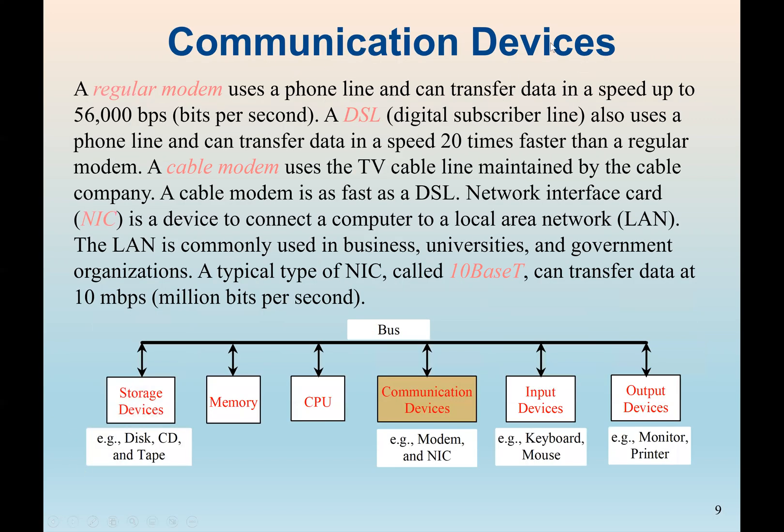We also have the communication devices. Nowadays, most computer systems have a communication device. Most of the time we buy a computer now because of the internet. So a communication device makes it possible for computers to access data or resources online, such as the internet, or to share data with another computer or other digital machines. So here we see the regular modem, which uses a telephone line and transfers data at a speed of 256 bytes per second. Again, it's a communication device.